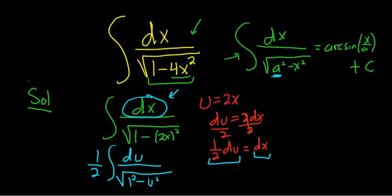So now we can go ahead and finish. So this is equal to 1 half arc sine of u over a. But u is simply 2x, so I'm going to go ahead and put 2x.